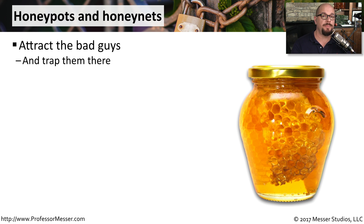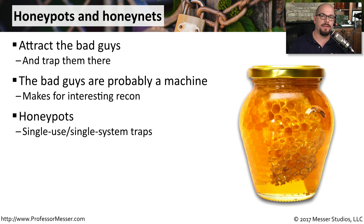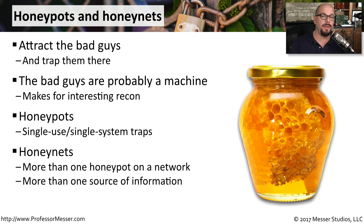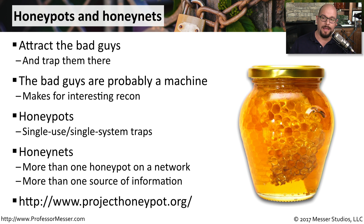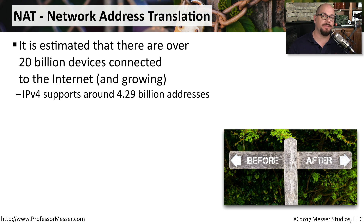Some organizations use honeypots and honeynets as a way to watch what the bad guys are doing. These are virtual systems designed to look very attractive to attackers. Most of the time, the devices hitting your network looking for open vulnerabilities are scripts and automated processes. Honeypots and honeynets are designed to track what these automated processes are doing and provide you with more intel about what the bad guys are looking for. A honeypot is typically a single system, while a honeynet is a larger group of honeypots connected together. More information is available at projecthoneypot.org.